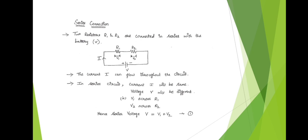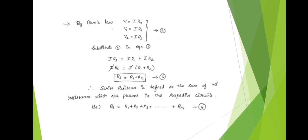Current will be the same and voltage will be different: V1 across R1, V2 across R2. Hence, the series voltage V is equal to the sum of the two voltages present in the circuit: V = V1 + V2. We mark this as Equation 1. By Ohm's law, we know that V = I × R, voltage is equal to current into resistance.